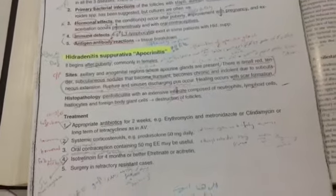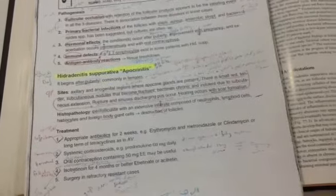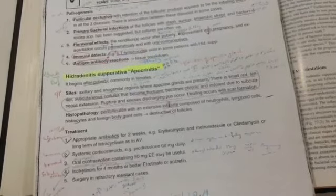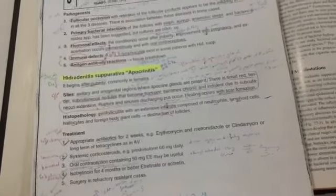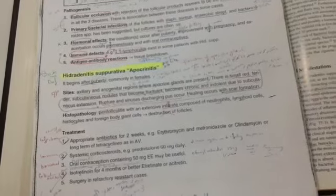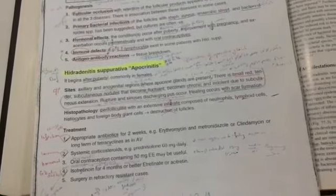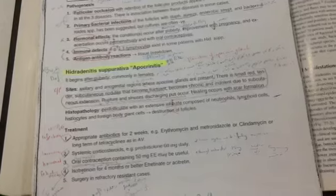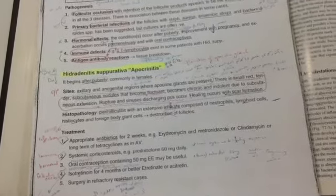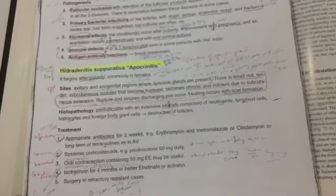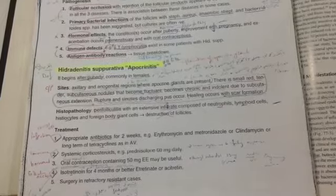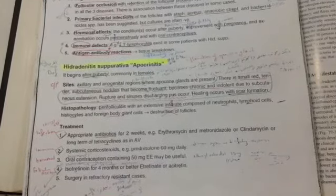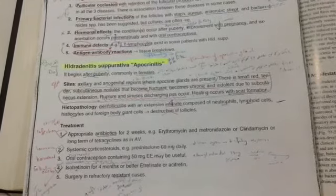The treatment: it's actually according to the pathogenesis. The treatment: infection, we give antibiotic. Immune, we give oral systemic steroid. And hormonal, we give oral contraceptives. Follicular occlusion, we give isotretinoin. And the last thing, sometimes that is from scarring, we make surgery to refractory resistant cases.